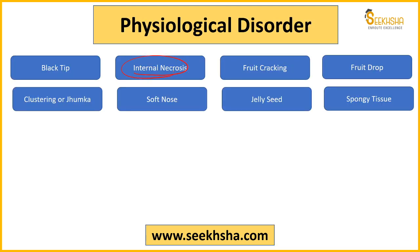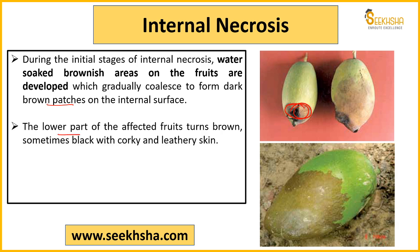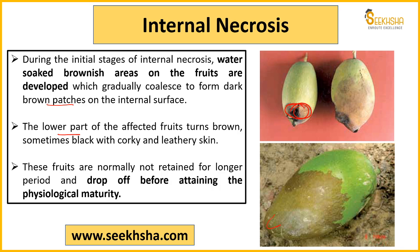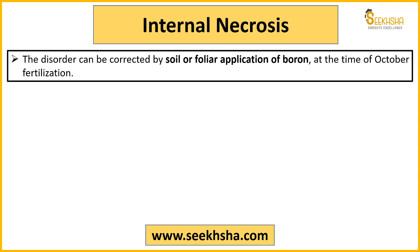Black tip ke baad jo next hamaray paas physiological disorder aata hai woh hai internal necrosis. Internal necrosis mein aapka jo fruit hai woh is tariqe ka hota hai — aap dekh saktay ho. Ismein basically kya hota hai: shuruaat ke andar aapko aisa lagega jaise wahan par water soak kar liye ho mango ne — woh bhoat zada gila gila aapko lagega jaise pani uske andar bhar gya ho. Aur dhire dhire maa par ek brownish color develop hona shuru ho jayega, aur dhire dhire yeh jo chote chote water spots hain jo brown color ke hain yeh badhne shuru ho jayenge aur apas mein join kar jayenge and ultimately ek dark brown patch yeh create kar denge. Basically lower part se mango ke is wale part se effect aana shuru hota hai aur woh dhire dhire brown and ultimately black hona shuru ho jayega. Yeh jo fruits hain, lambe samay ke liye aap isko retain nahi kar saktay and prematurely yeh drop ho jaate hain. Isko cure karne ke liye aap boron ka istamal kar saktay ho — aap soil ke andar bhi apply kar saktay ho ya phir aap tree ke upar spray bhi kar saktay ho — aur yeh basically October ke time par recommended hota hai.